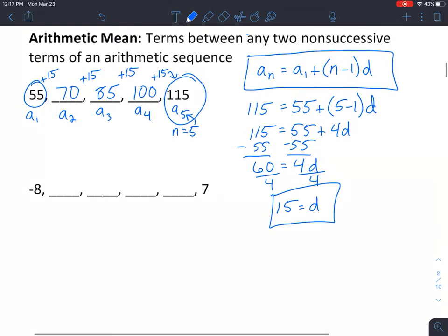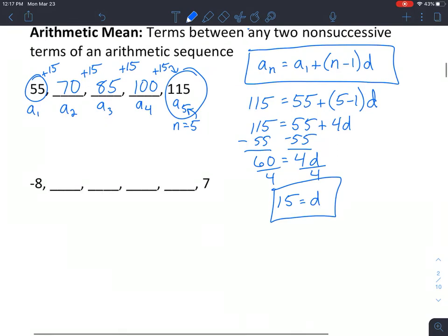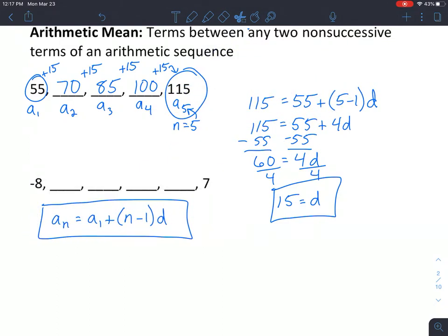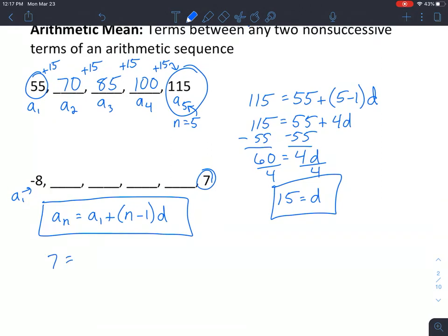Okay, so let's use the formula one more time down here. And so we have a sub n. I'm just going to kind of move it down. Okay, so now we have, this time we have a sub n as being 7. A sub 1 is negative 8. So we have 7 equals negative 8 plus,